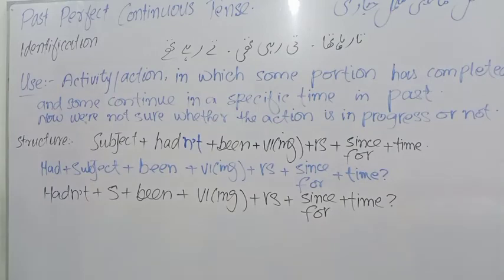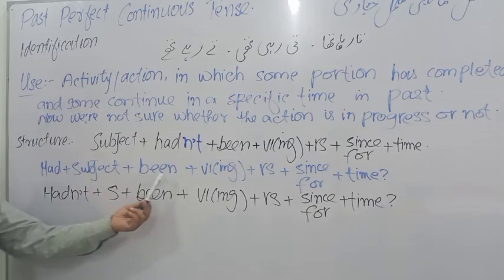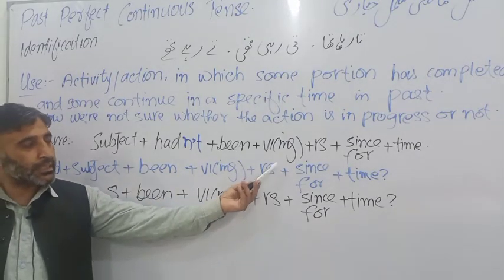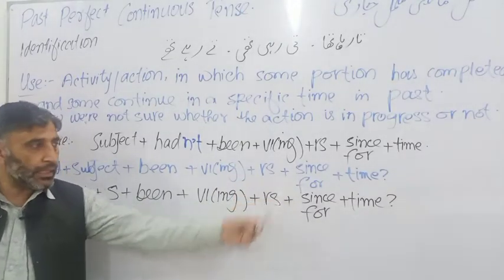For interrogative, had comes first, then subject, then been, then first form plus ing, then rest of the sentence, then sense or for, and then time.